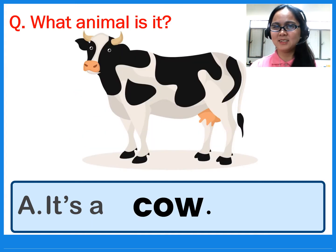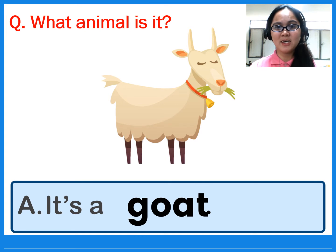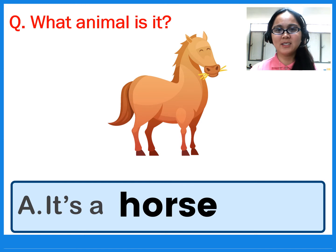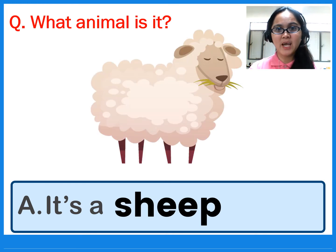What animal is it? It's a cow. What animal is it? It's a cow. What animal is it? It's a goat. It's a goat. What animal is it? It's a goat. What animal is it? It's a horse. It's a horse. What animal is it? It's a sheep.